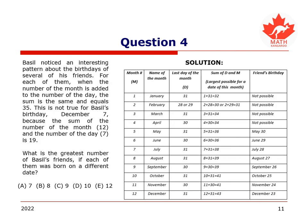Here is the solution. We will arrange the information given in the question in a table. The second column is completed based on our knowledge about the calendar. None of Basil's friends in question can be born in January, February, March, or April, since for these months, the largest possible sum of the number of a day and the number of the month is less than 35.